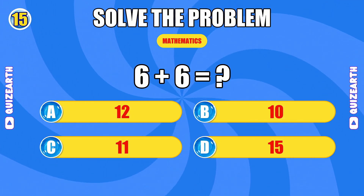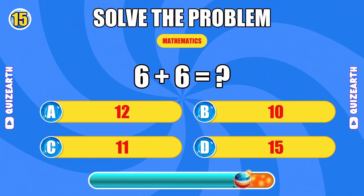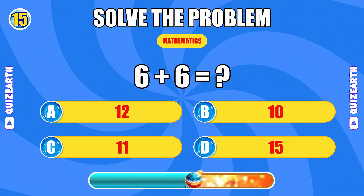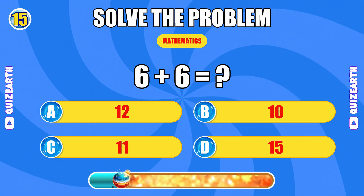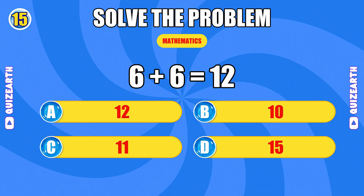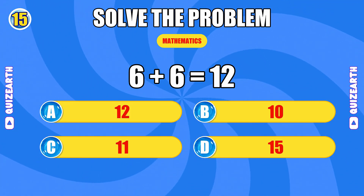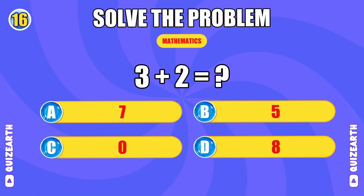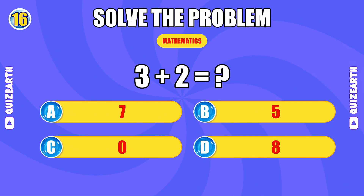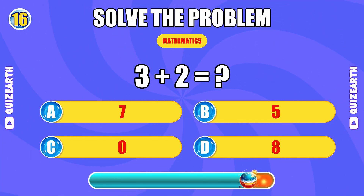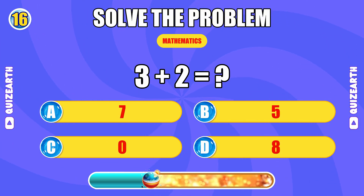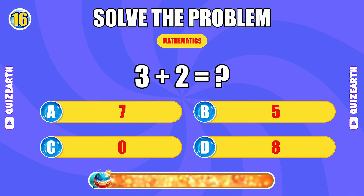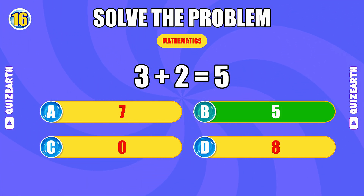What do you get when you add six and six? Nailing it — the answer is 12. What is three plus two? You're in the zone — the answer is five.